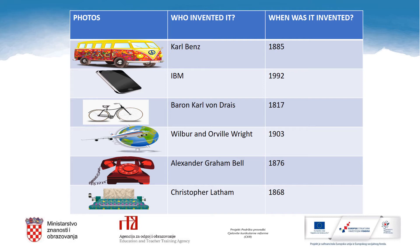It all started when Orville was seven and Wilbur was eleven years old. The telephone was invented by Alexander Graham Bell, best known for his invention of the telephone. His interest in sound technology was deep-rooted and personal, as both his wife and mother were deaf. The first typewriter was invented by Christopher Latham in 1868, but it was introduced commercially in 1874.